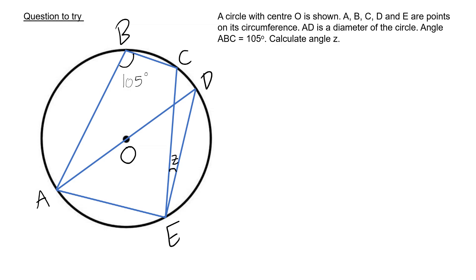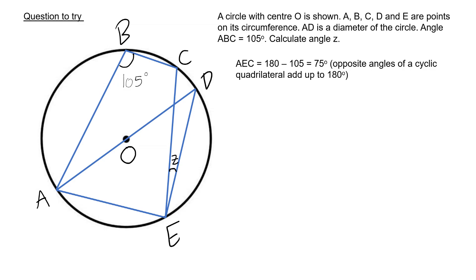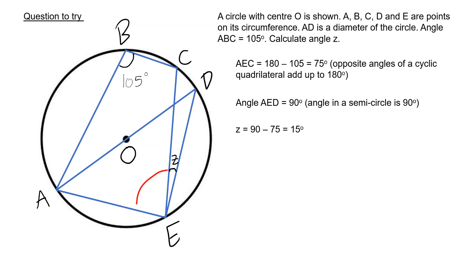Here is the answer. Angle AEC is going to be 75 degrees because it's in the cyclic quadrilateral opposite to 105 degrees. Angle AED is 90 because the angle in the semicircle is 90 degrees. This angle is 75 and the whole angle here is 90, so to work out Z, I do 90 take away 75, which is 15 degrees.